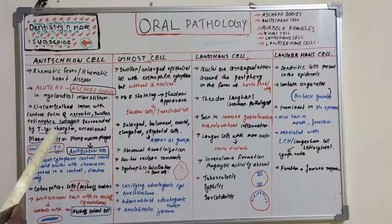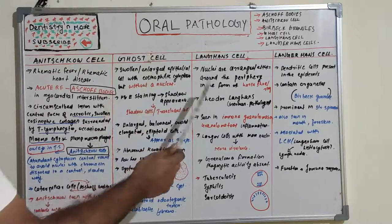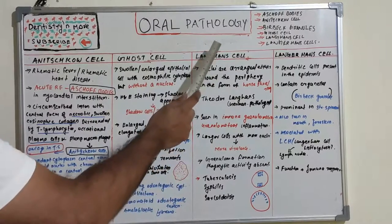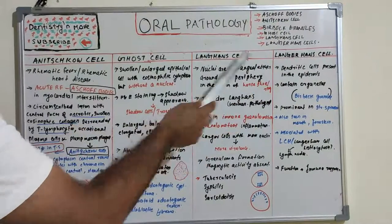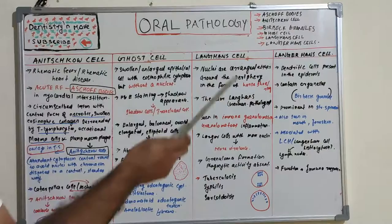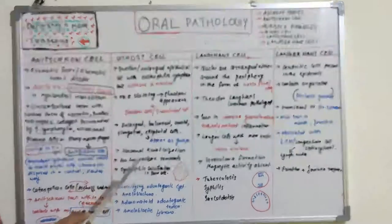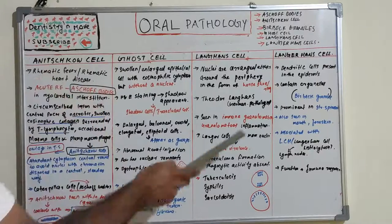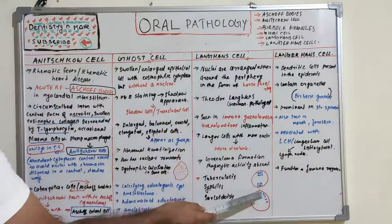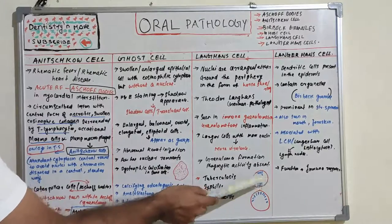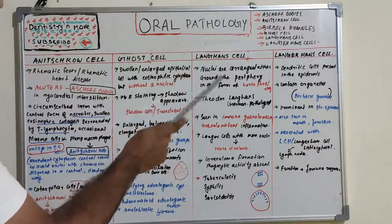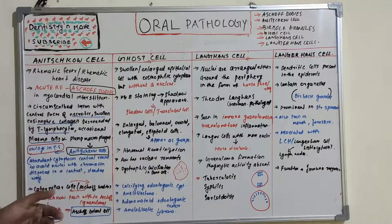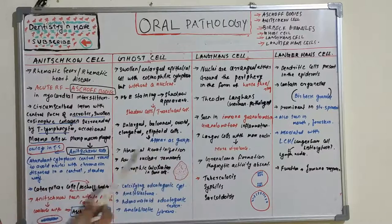Ghost cells are commonly seen in calcifying odontogenic cyst, ameloblastoma, ameloblastic fibroma, and AOT — adenomatoid odontogenic tumor. Now let's move on to Langhans cells. Never get confused: we have Langhans cells and Langerhans cells. Langhans cells have nuclei arranged around the periphery in the form of a horseshoe or ring. This peculiar arrangement of nuclei was discovered by Theodore Langhans, a German pathologist.